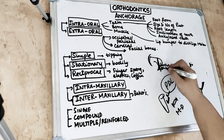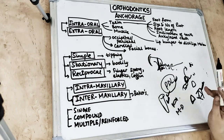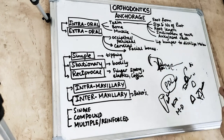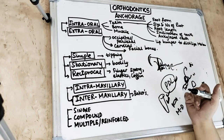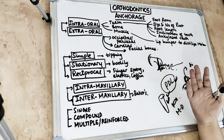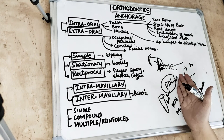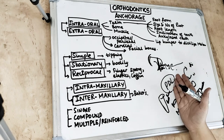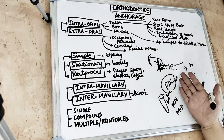This type of extraoral anchorage is used for Class 2 cases. Cervical anchorage is taken from the cervical region - the neck - and the appliance used is called the cervical headgear. Taking support from the facial bone, the frontal bone, or the mandibular symphysis refers to reverse headgears, which take support from the forehead and chin.